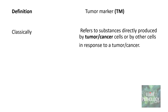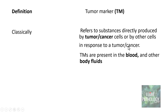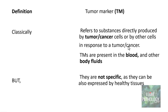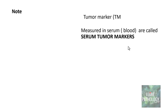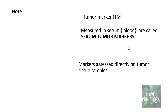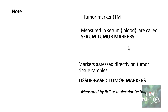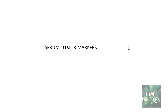What are tumor markers? Classically, tumor markers refer to substances which are directly produced by tumor or cancer cells, or by other cells in response to a particular tumor or cancer. These tumor markers are present in the blood and other body fluids, but they are not specific — they can also be expressed by healthy tissues at very small concentrations. Tumor markers measured in serum are called serum tumor markers, while tissue-based tumor markers are assessed directly on tumor tissue samples, classically measured by immunohistochemistry or molecular testing. In this tutorial, we will concentrate only on serum tumor markers.